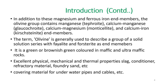In addition to the magnesium and iron end members, the olivine group also contains manganese, calcium-manganese, and calcium-magnesium end members. If manganese is present it is known as tephroite; if calcium-manganese, it is known as glaucochroite; if calcium-magnesium, it is known as monticellite; and calcium-iron is known as kirschsteinite. These are the end members of the olivine group.